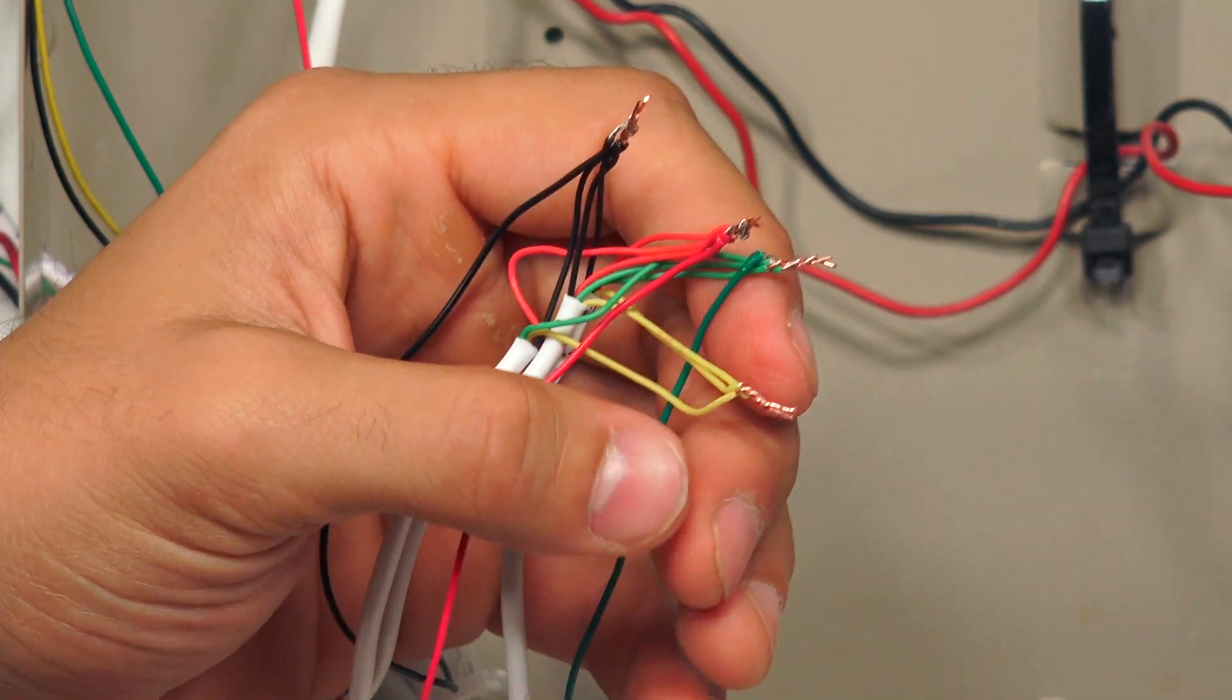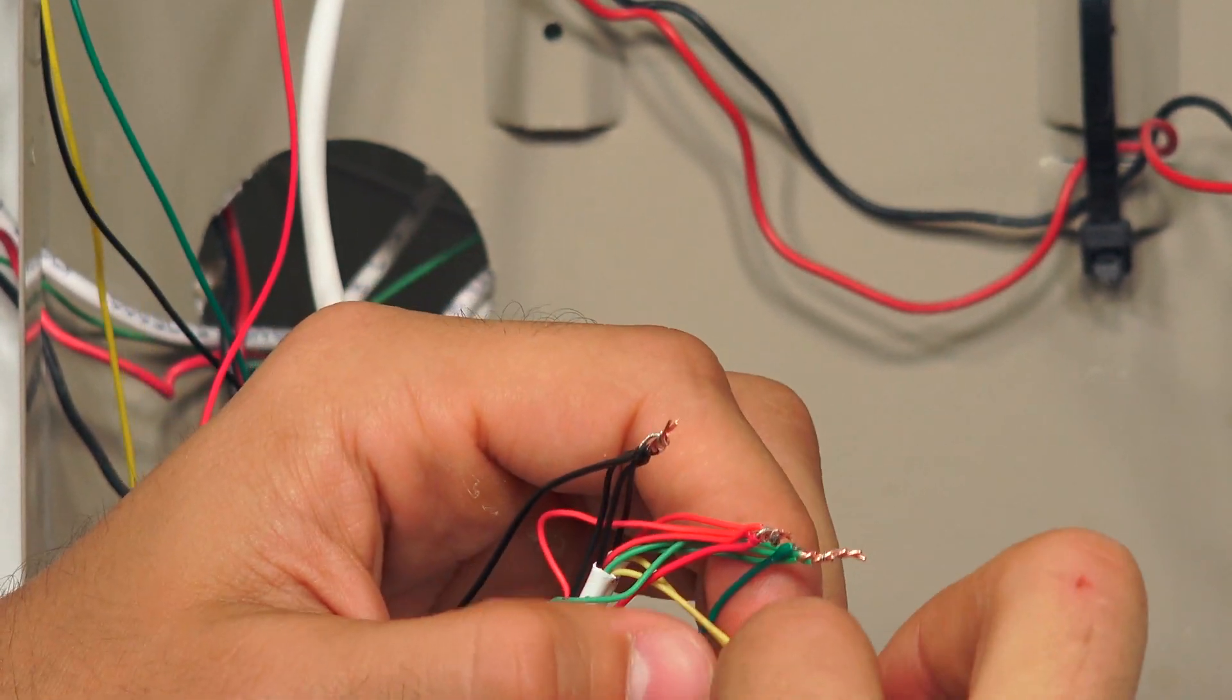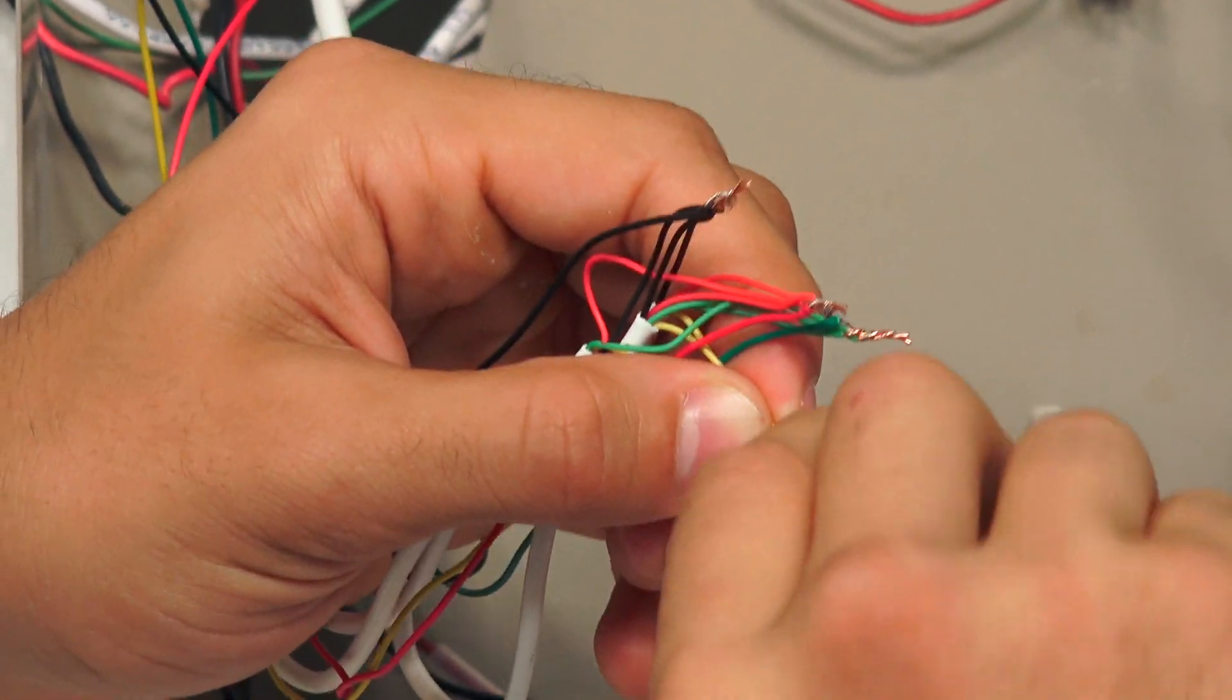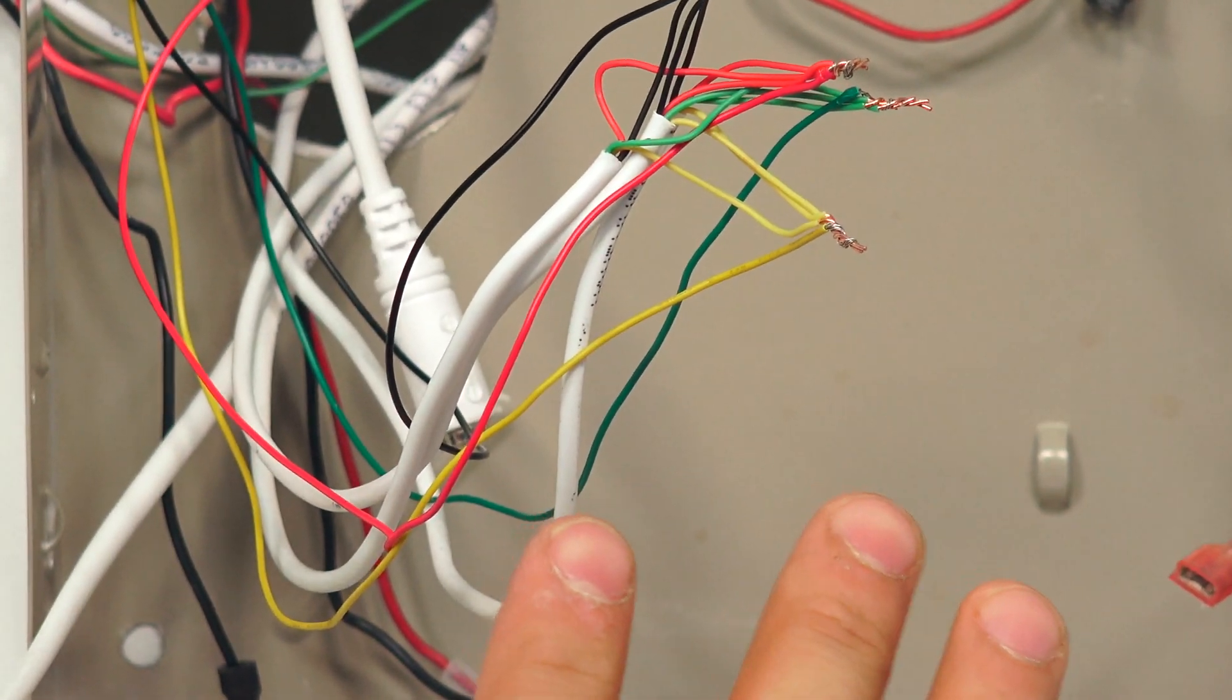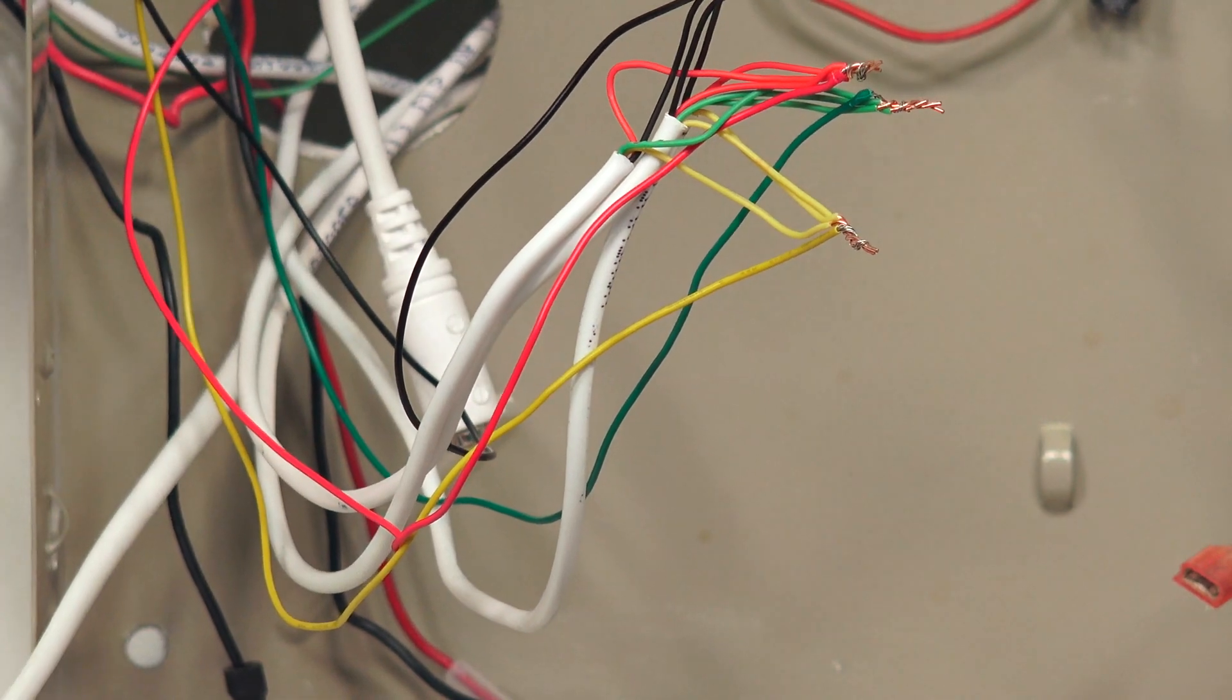So now we'll take our yellow wire, twist off the end, lay it in there, twist it in. Cool. So now when we install this back on our system, we know that our connections are likely going to be just fine.